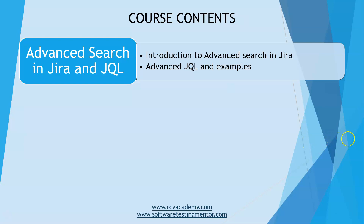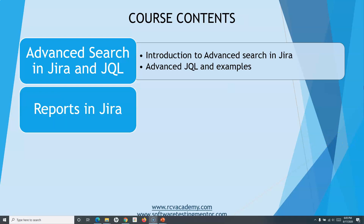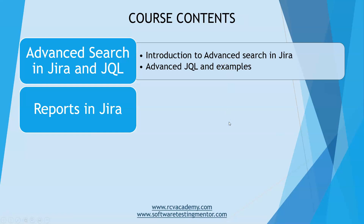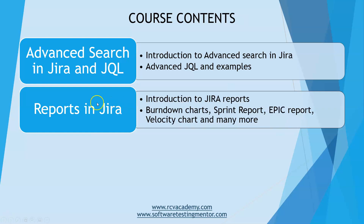The next section is about reports in Jira. Jira provides a lot of out-of-the-box reports, which we will cover in this section — what reports are available and then those reports in detail. For example, the burndown chart, sprint report, epic report, velocity chart, and many other reports available out-of-the-box will be covered.